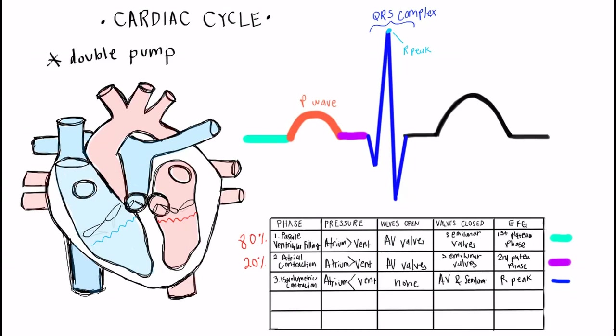The next stage is ventricular systole — systole meaning contraction. The pressure is greatest in the ventricles since they are contracting, which keeps the AV valves closed but causes the semilunar valves to open. This is because ventricular pressure exceeds the pressure in the pulmonary trunk on the right side and the aorta on the left side, causing ejection of blood through the arteries. Ventricular contraction is shown on the EKG by the plateau phase after the QRS complex.